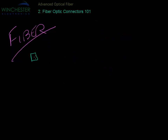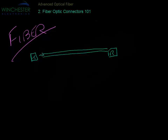Every fiber link works by having a transmitter at one end and a receiver at the other end, with fiber in between. This fiber can be thought of as a kind of pipe where the light goes in one end and comes out the other end into the receiver. If there are connectors in the line, they will add to the insertion loss. In between these connectors is a fiber end face, and these end faces must be lined up very exactly in order for the light to go from one into the other.